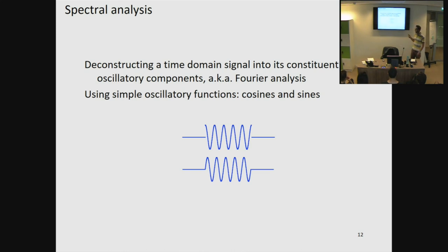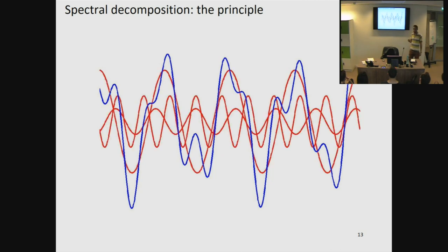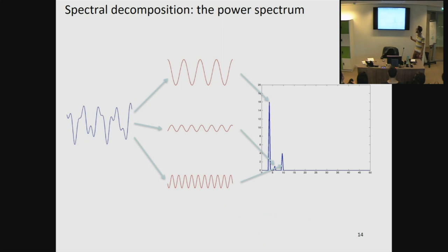If we try to apply spectral analysis to a signal which looks a bit complicated, we can see that it is composed of these basis functions. The signal in blue is a weighted combination of the basis functions in red, and each basis function has its own frequency, amplitude, and phase. For example, the topmost basis function has the highest frequency but only an intermediate amplitude. We can visualize the contribution of each basis function in the power spectrum, where we have frequency on the x-axis and power — the square of the amplitude — on the y-axis.